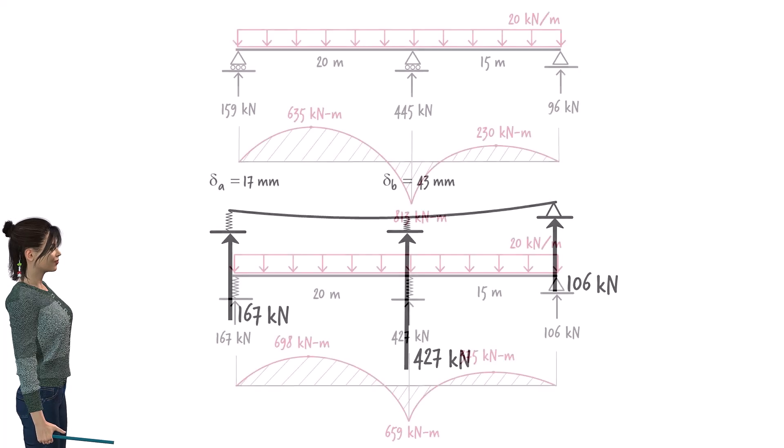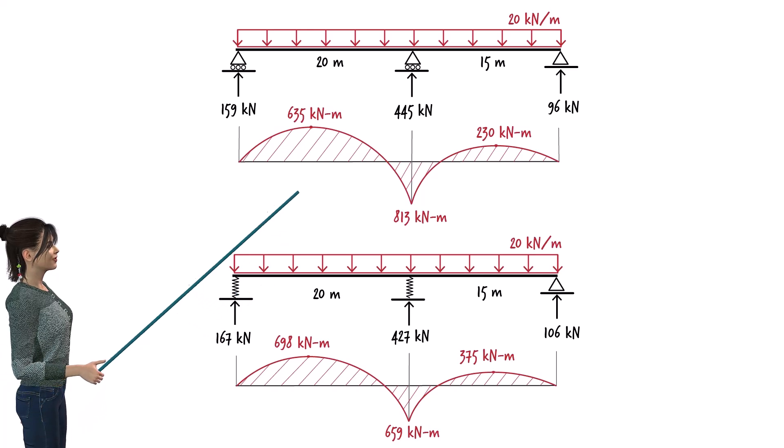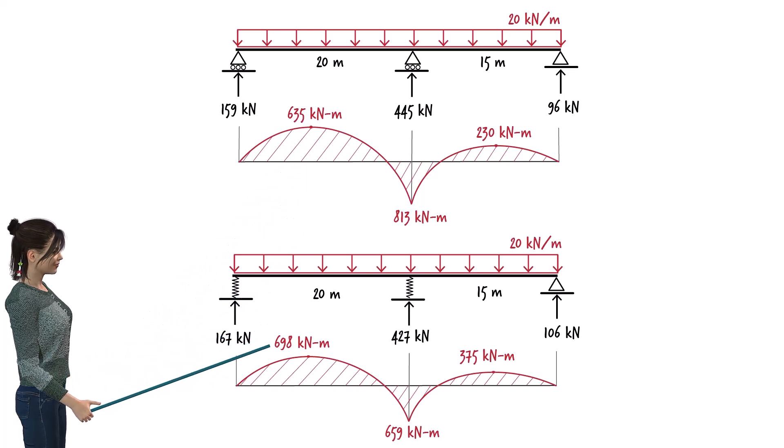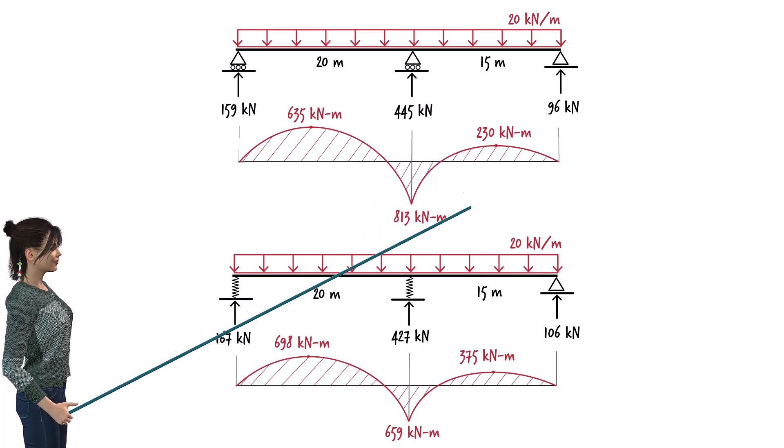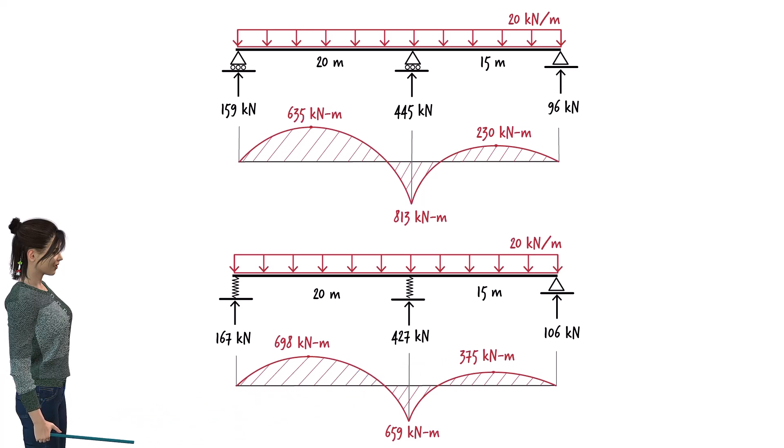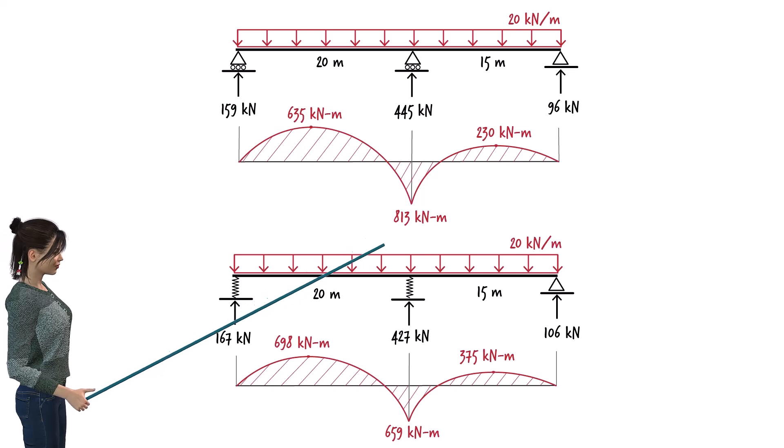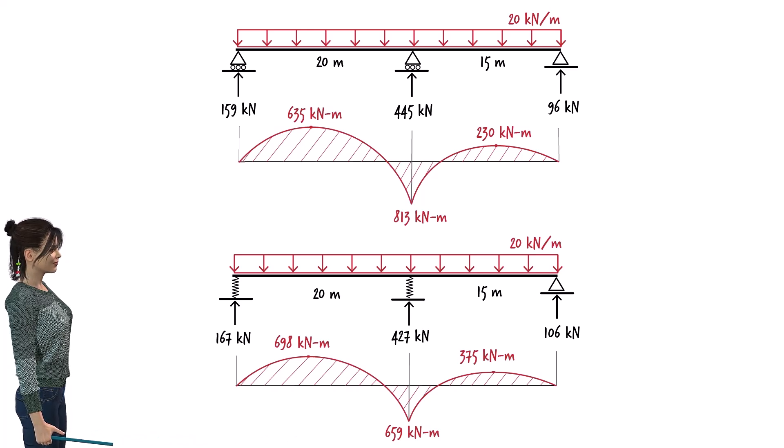This shift in support reactions leads to an increase in the positive bending moment and a decrease in the negative bending moment in the beam. Specifically, the positive moment in the left span increases from 635 to 698 kNm, and in the right span, it increases from 230 to 375 kNm. Meanwhile, the maximum negative moment decreases from 813 to 659 kNm. This comparison shows how elastomeric bearings could redistribute forces and moments in beams.